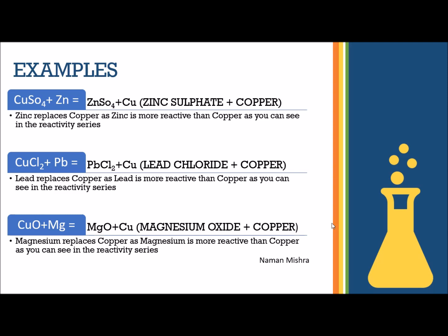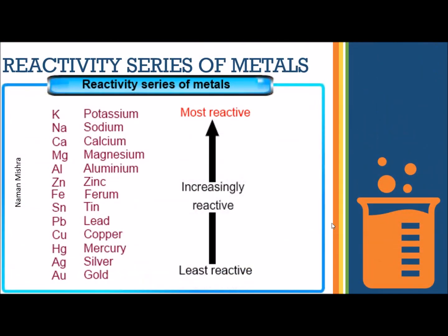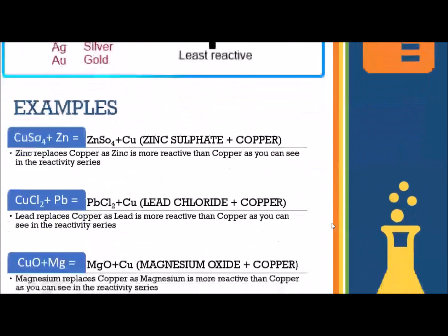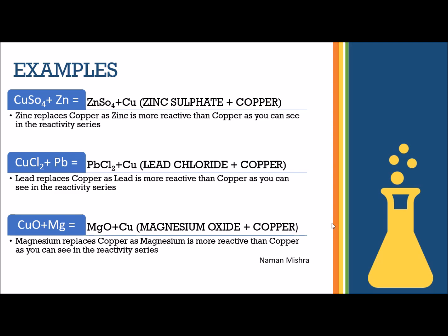The last example is CuO (copper oxide) plus magnesium. Magnesium is more reactive than copper — magnesium is 4th from the top in the reactivity series, while copper is near the bottom. So magnesium replaces copper, giving you MgO (magnesium oxide) plus Cu (copper). These were three examples; there are many more, but I'm just covering the basics here.